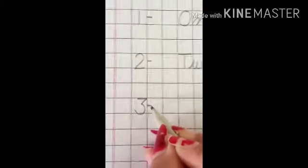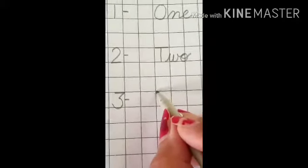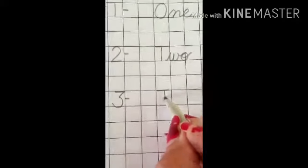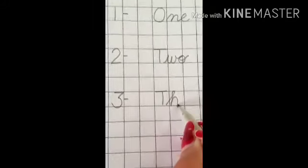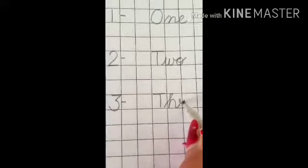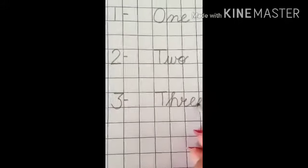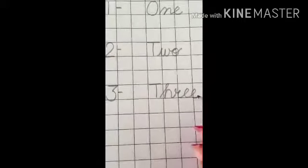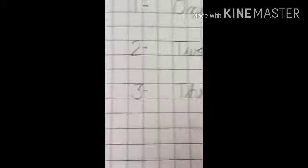It's 3. Spelling of number 3 is T-H-R-E-E. 3. T-H-R-E-E. 3.